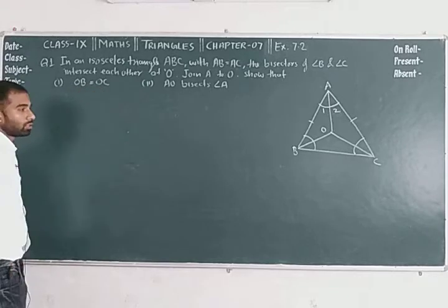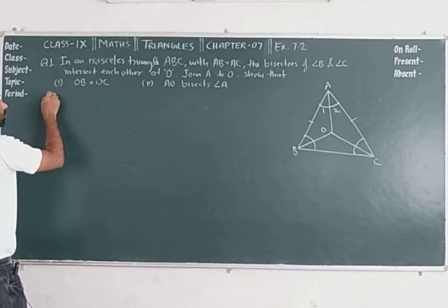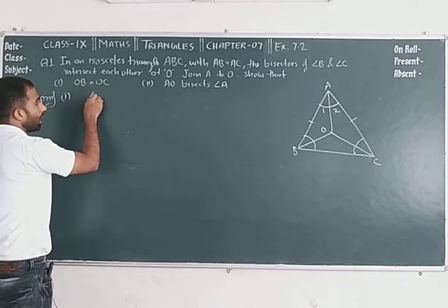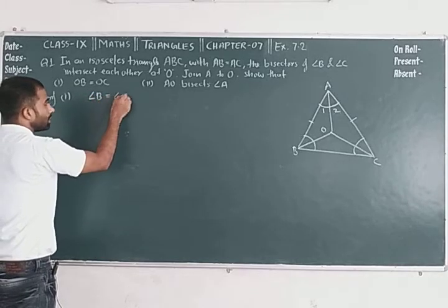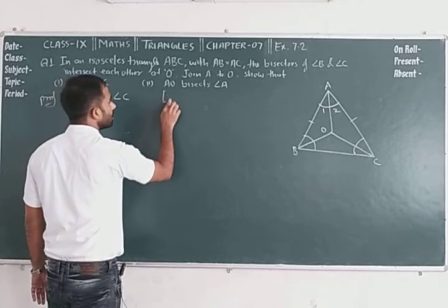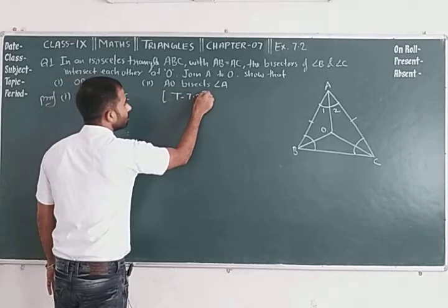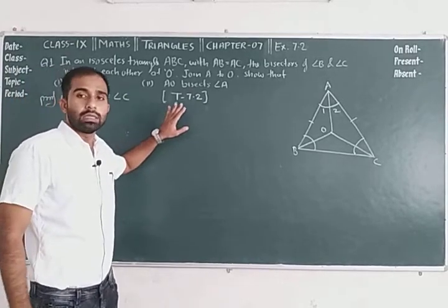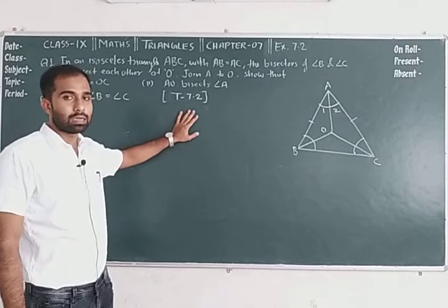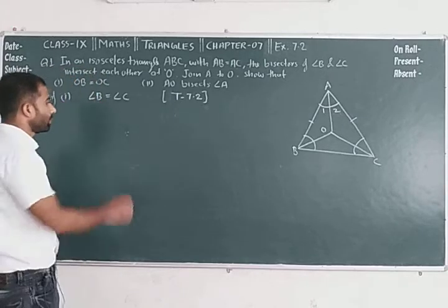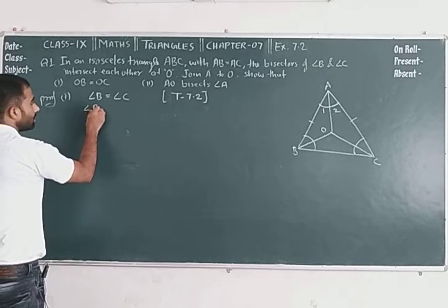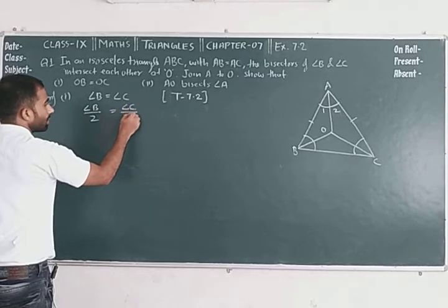First of all, to prove OB is equal to OC. Angle B is equal to angle C by Theorem 7.2.